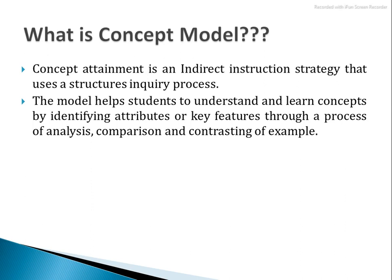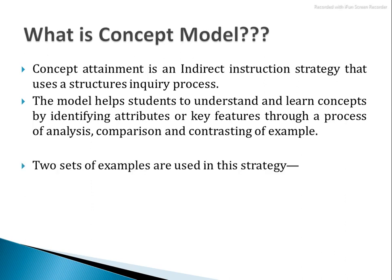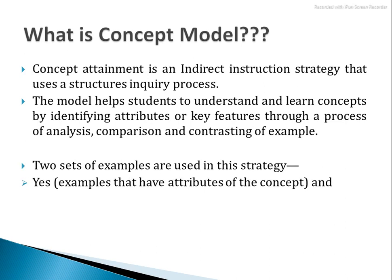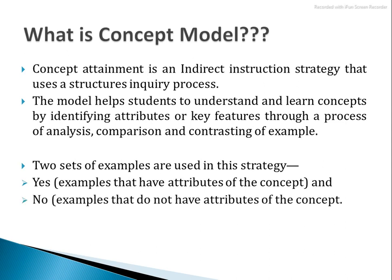Those attributes that are wrong — that will not vary in their concept — we call them negative. So the teacher gives attributes and key features and divides them into yes and no categories. When we get to divide them into yes, the teacher gives points to yes. They will then conclude and define the concept. Two sets of examples are used in the strategy: yes, meaning examples that have attributes of the concept, and no, meaning examples that do not have that attribute of the concept.